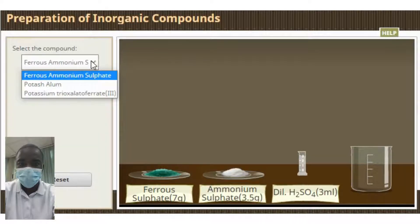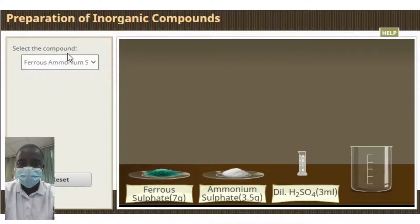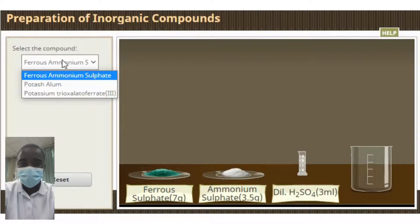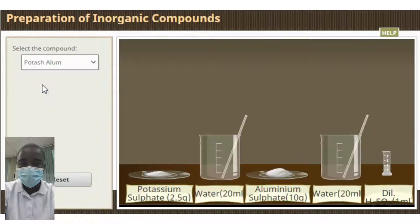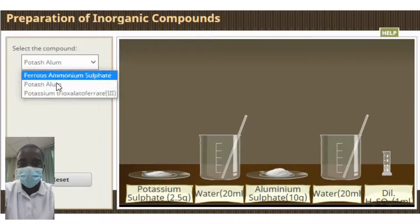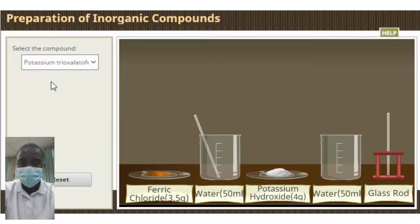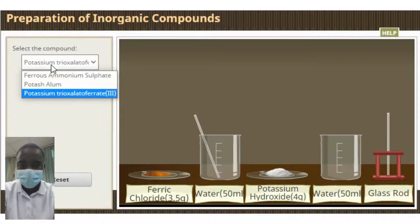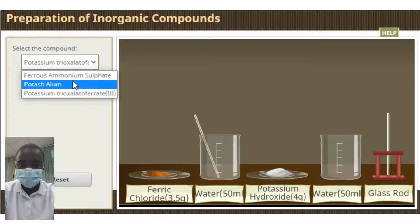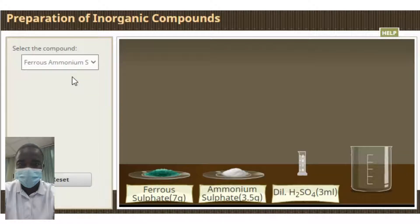What is an inorganic compound? An inorganic compound is a chemical compound that is not organic in nature. These compounds are distinguished from organic compounds in that they generally contain one or more metal atoms. They are found in nature as minerals, and they are also produced industrially.